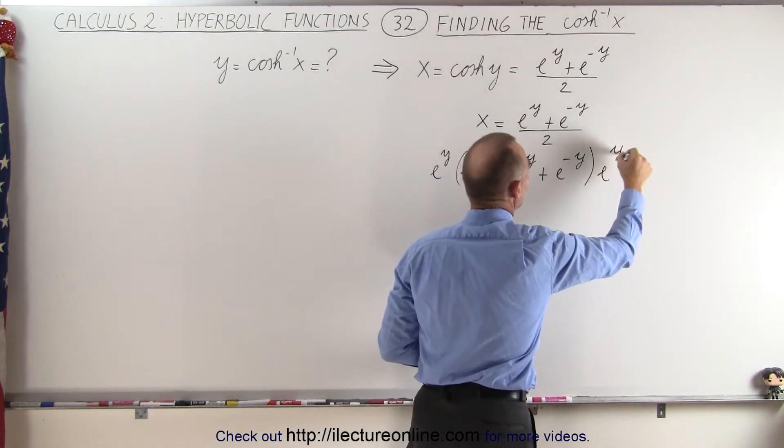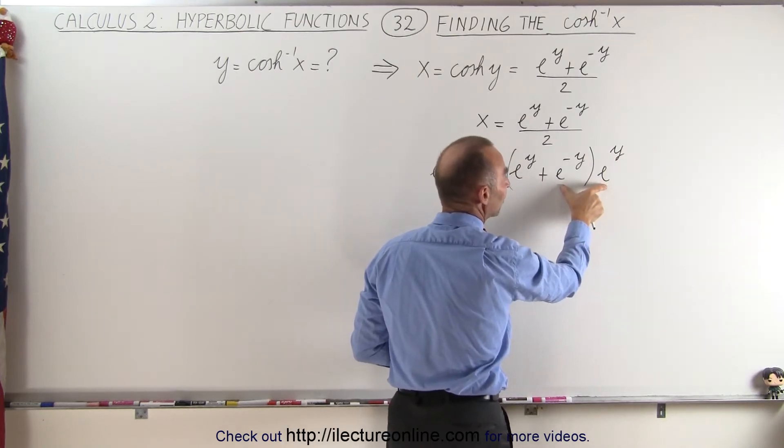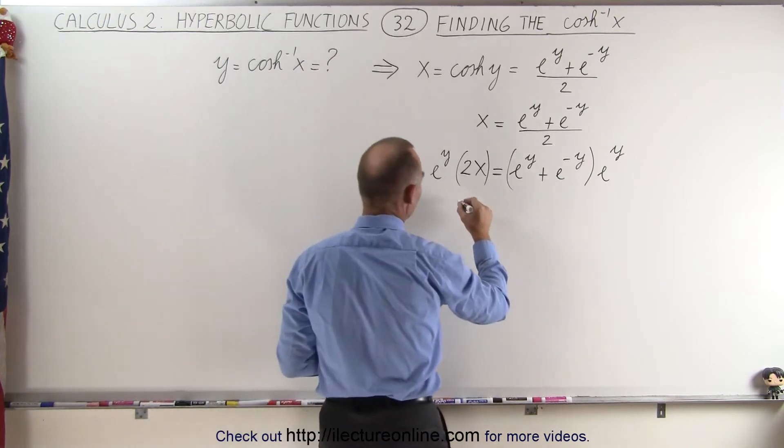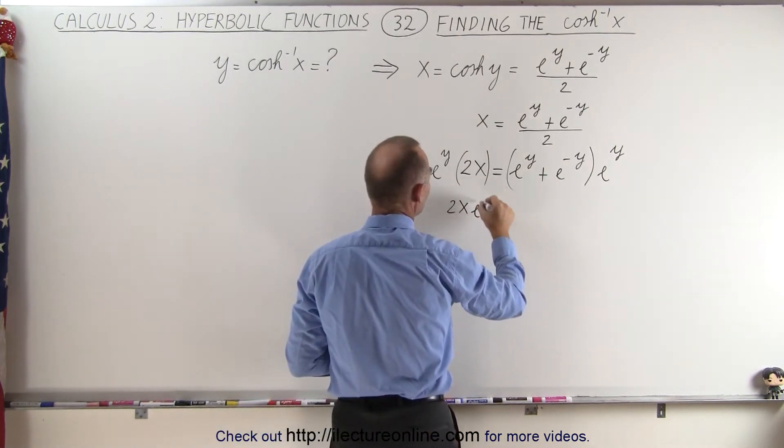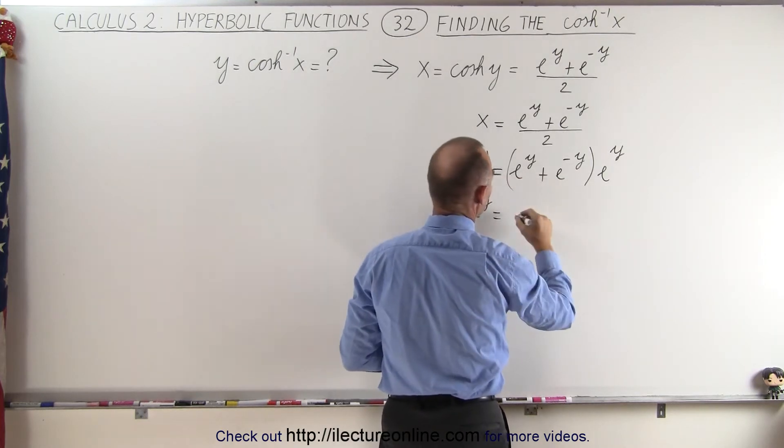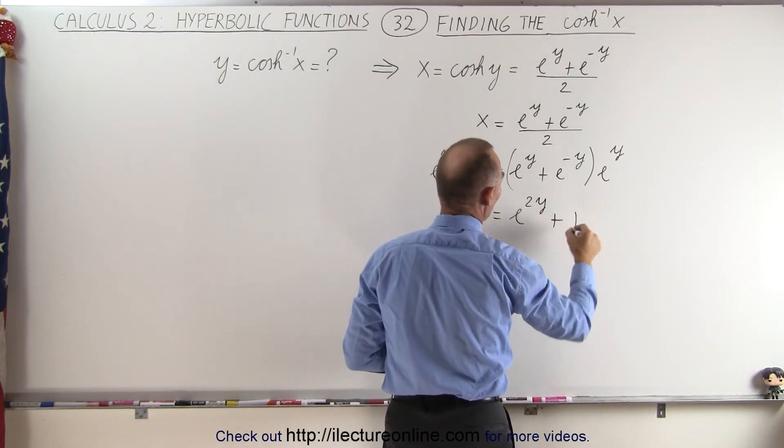The reason why we do that is when we multiply these two together, of course, then we simply get 1, and that simplifies the equation. So on the left side, we get 2x times e to the y equals on the right side, multiply these two together, we get e to the 2y, and then plus 1.